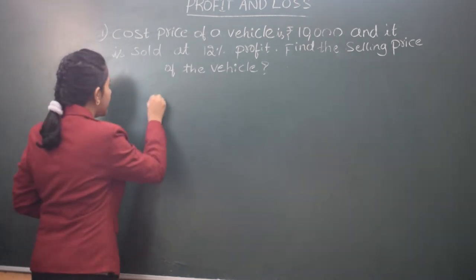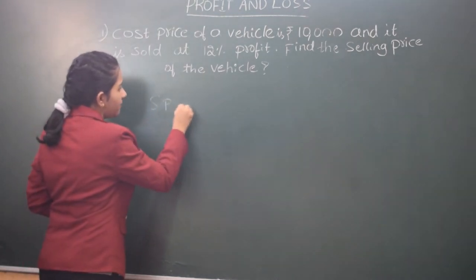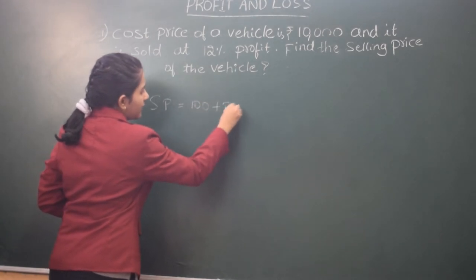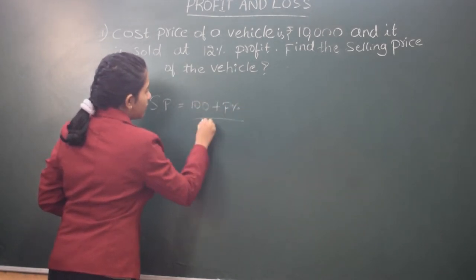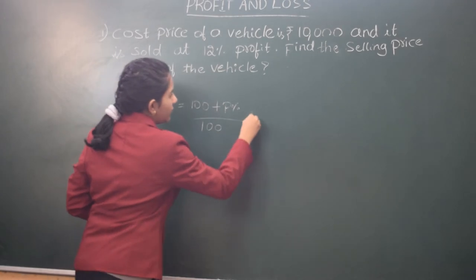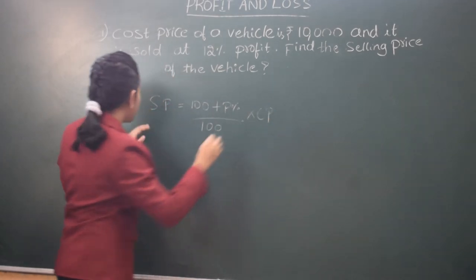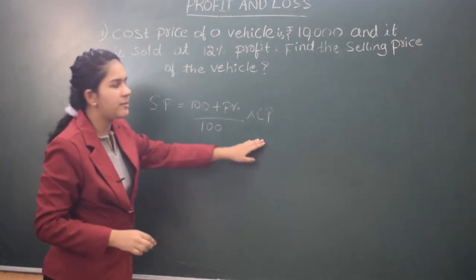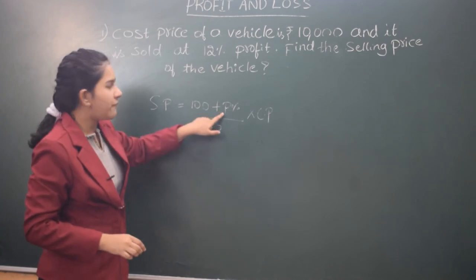So it has a formula. SP is equal to 100 plus profit percentage divided by 100 into CP. So SP is nothing but the selling price and CP is the cost price. Profit percentage.